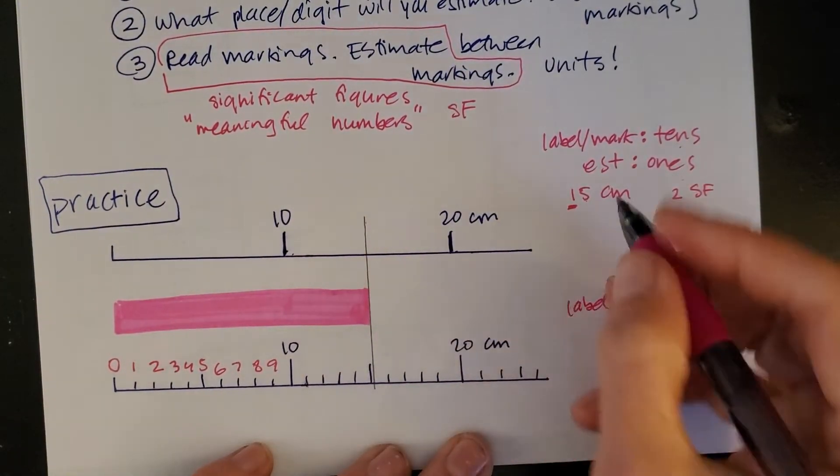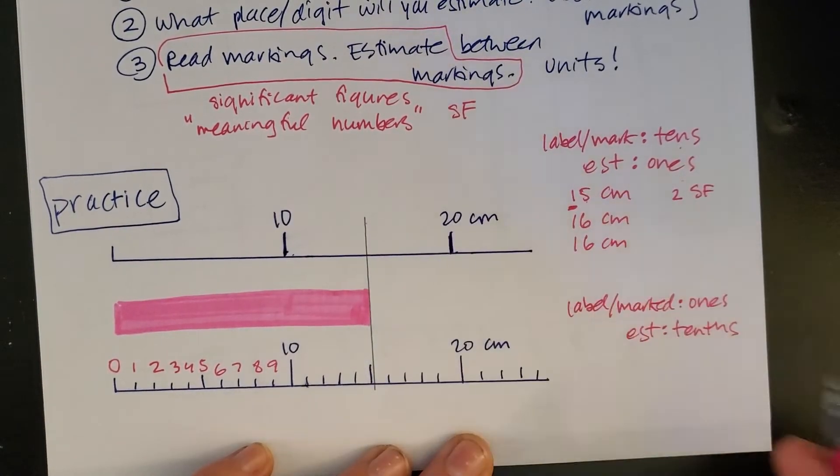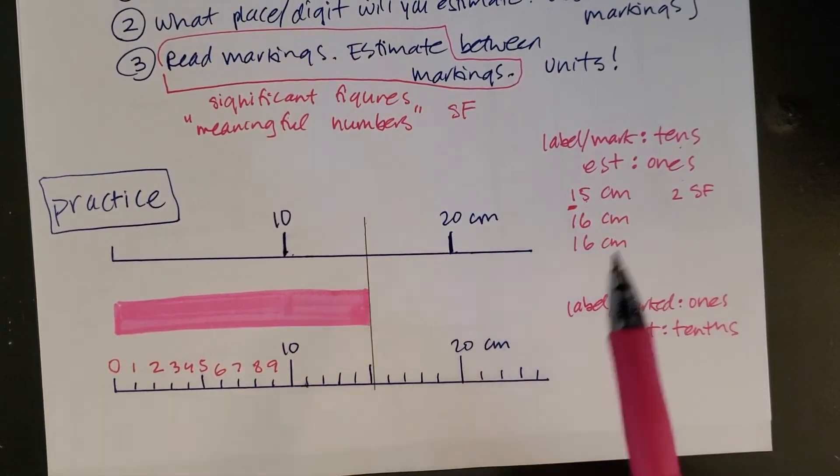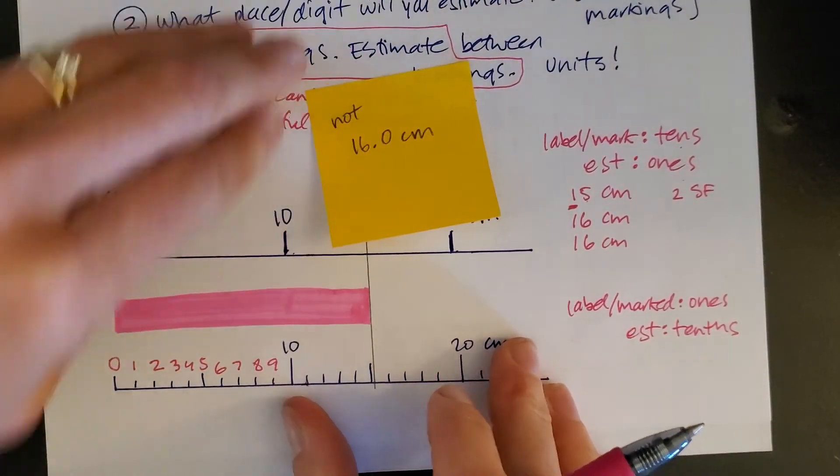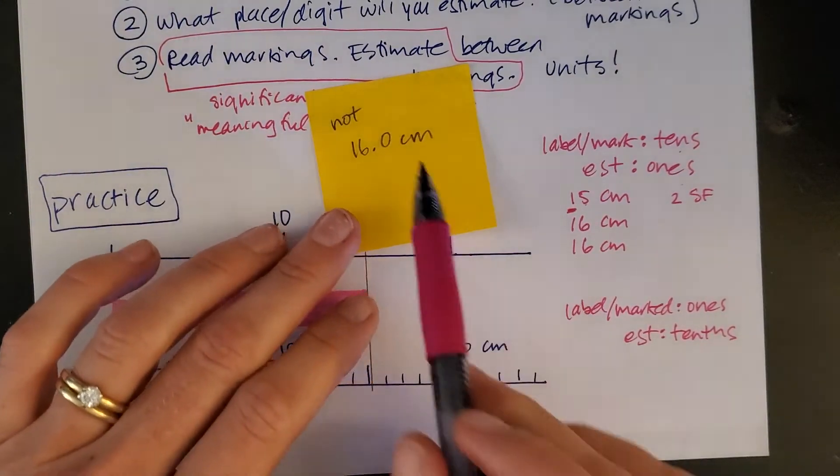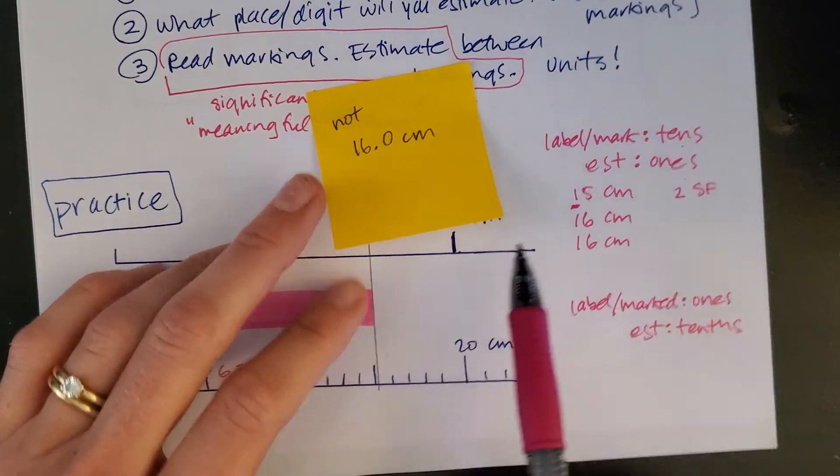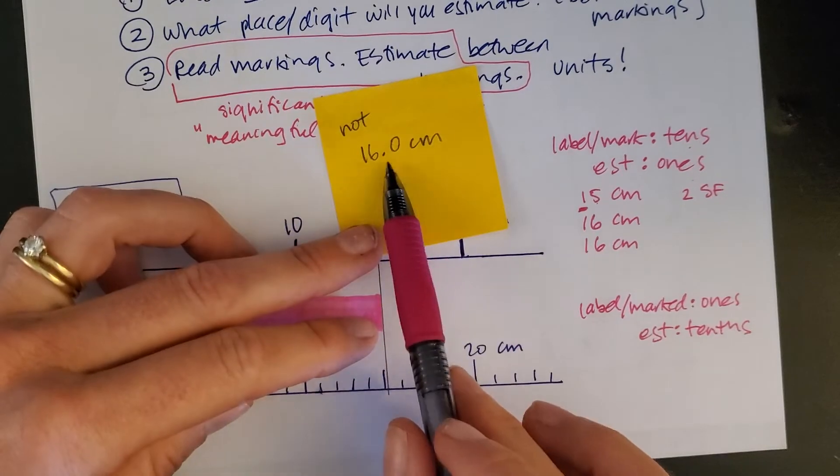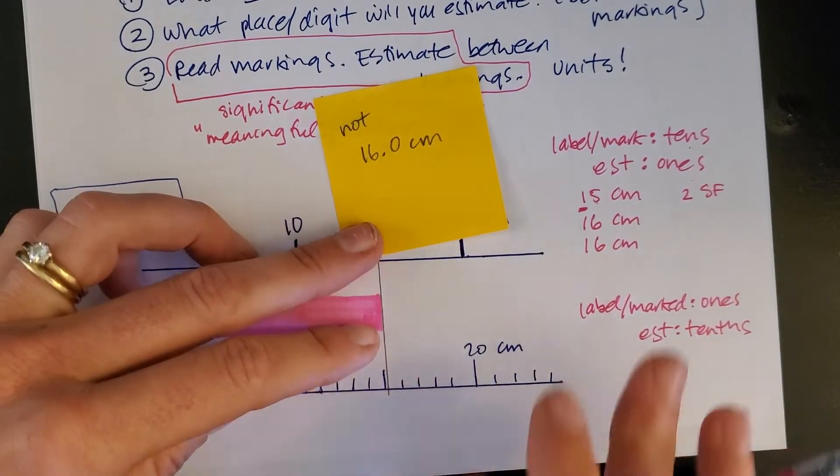Now, say your lab partner looks at this and says, I think it's more like 16 centimeters, and then your next lab partner thinks 16 centimeters as well. All of those are correct. What would not be correct is if somebody says, I think that that's 16.0 centimeters. You're just feeling like you need to add zeros on. And how can I figure that out? We'll go back to the work you did here initially. Tens are marked. I estimate the ones, because I'm estimating between 10 and 20. You're not going to add any places beyond the ones, so don't add a tenth place.